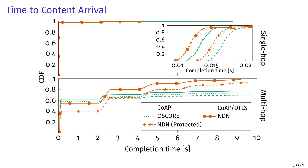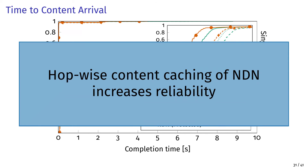In the multi-hop scenario, we see an expressive staircase pattern reflecting the five retransmissions with two-second timeout intervals. Both NDN deployments complete more than 95% of all requests, while the CoAP deployments have success rates below 80%. NDN shows worse performance at the two-second mark because it induces more traffic due to hop-wise retransmission, but it is able to recover more messages from on-path caches than CoAP's end-to-end retransmission. Protocols with larger packets perform worse overall. The hop-wise content caching of NDN increases the reliability of content requests in low-power and lossy wireless environments.